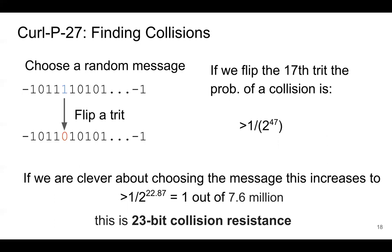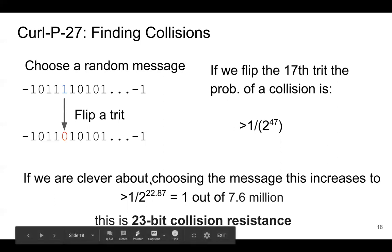The way we find collisions is: choose a random message and flip a trit. If we flip the 17th trit, the probability of a collision is 1 over 2 to the 47th. But if we're clever about choosing the message — rather than a purely random one — and fix some of the trits, we can ensure that diffusion won't happen in the first few rounds. This significantly boosts our probability of reaching the 20th round without any diffusion.